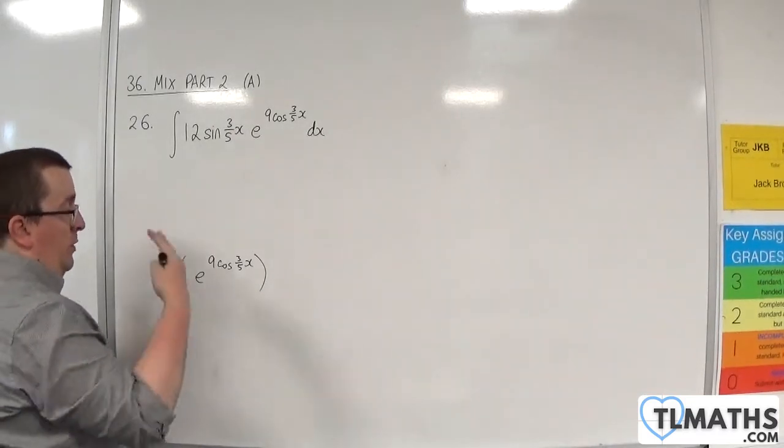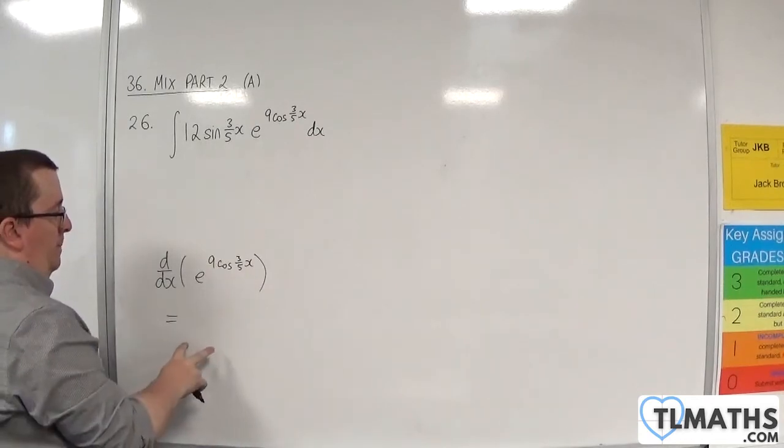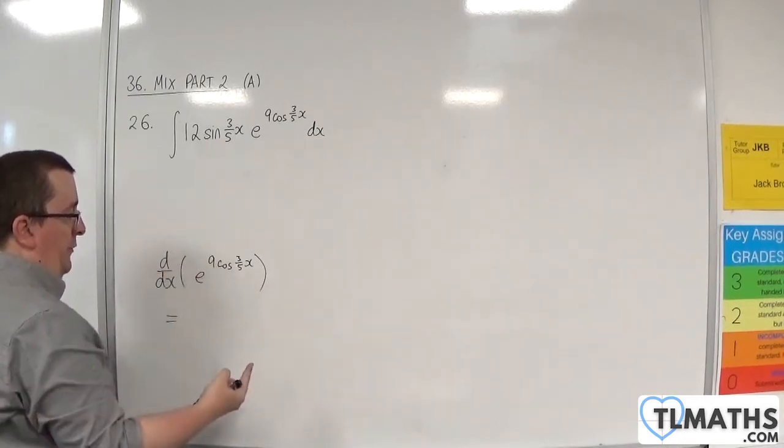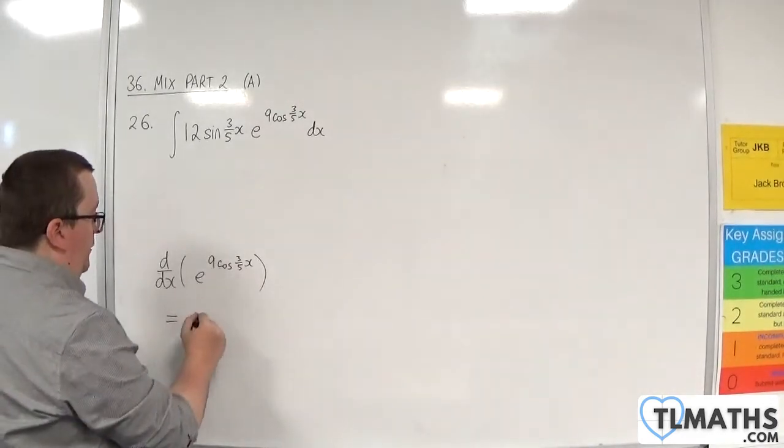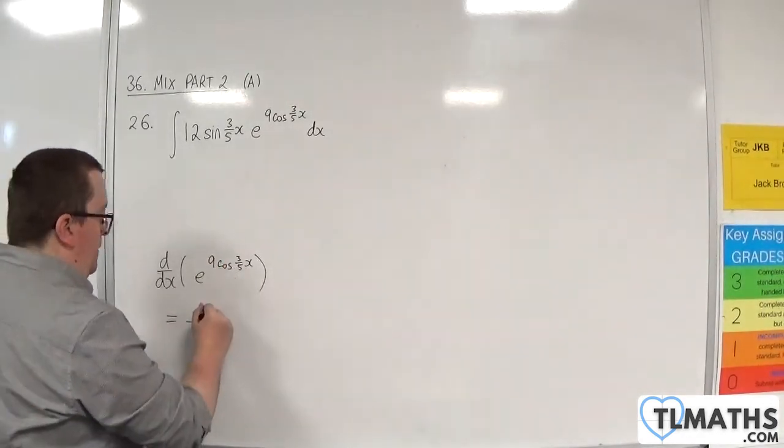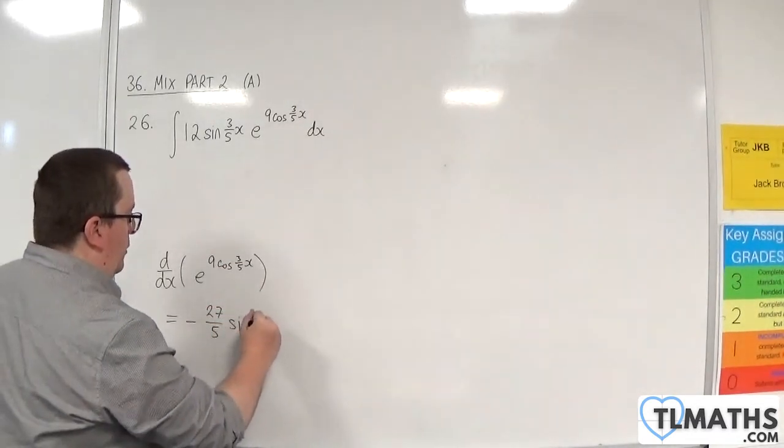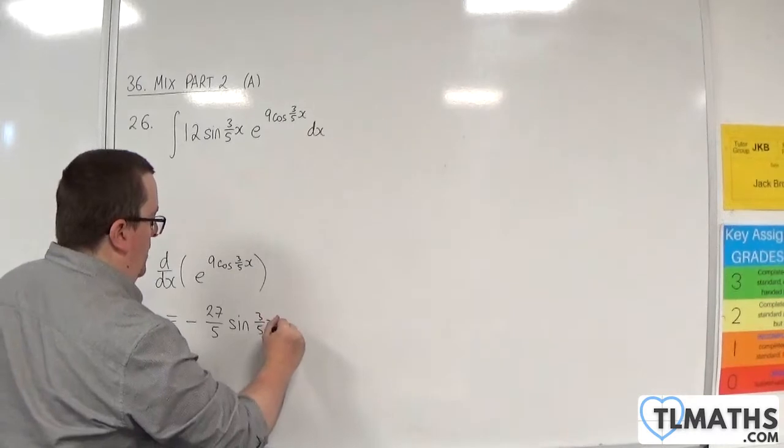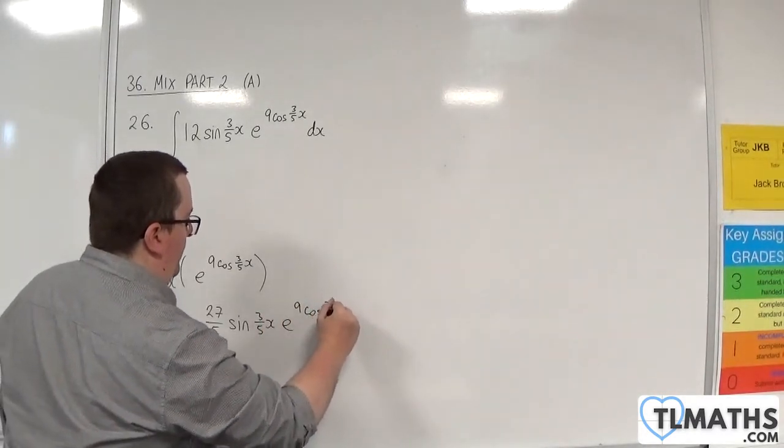So in order to differentiate this, we've got to use the chain rule. The derivative of the inside comes outside. Now cosine goes to minus sine, and the 3/5 will multiply with 9. So minus 9 times 3/5, so minus 27 over 5, sine of 3/5 x, e to the 9 cosine of 3/5 x.